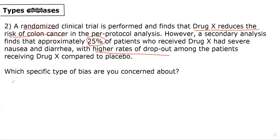We remember that the three main types of bias to always consider when evaluating a study result are selection bias, measurement bias, and confounding.